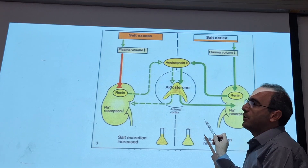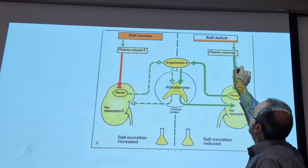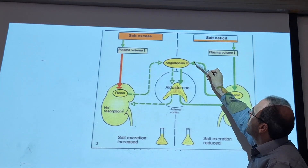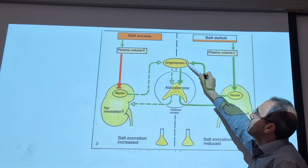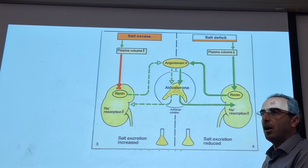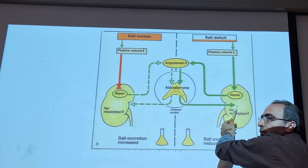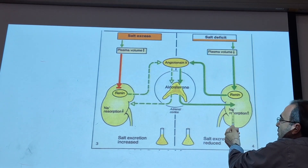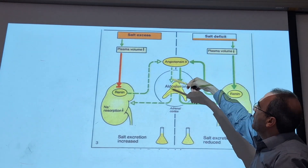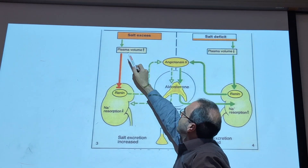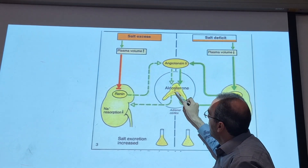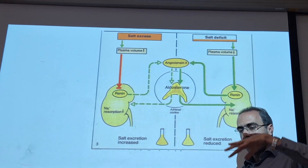Otherwise, when we have salt excess, plasma volume increases and renin excretion is inhibited. It cannot produce more angiotensin, cannot produce aldosterone, and sodium retention is decreased. Increasing aldosterone is known as Conn's disease or hyperaldosteronism. It can be primary or secondary due to liver disease, heart failure, pregnancy, and nephrosis.